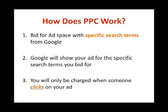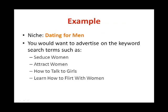Pay-per-click works by starting with an advertiser building an ad with specific search terms on Google. Each time a web user makes a search query containing a keyword, Google will show your ad for the specific keyword you bid for. However, no charges are incurred for having your ad shown — you are only charged each time someone clicks on your ad. For example, for the niche 'dating for men,' you would bid on terms such as 'seduce women,' 'attract women,' 'how to talk to girls,' and 'how to flirt with women.' Your ad will be displayed in the sponsored links column, and you are only charged when a user clicks on it.